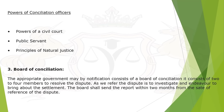Powers of a conciliation officer: powers of a civil court; acts as a public servant; works on the principle of natural justice. Board of Conciliation: the appropriate government may by notification constitute a board of conciliation. It consists of two to four members to resolve the dispute — to investigate and endeavor to bring about a settlement. The board shall send the report within two months from the date of reference of the dispute.